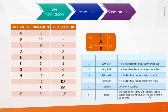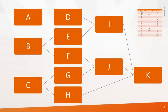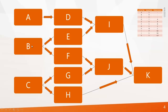Now let's see the example for better understanding. I have arranged all the activities based on their relationships and logic. In this exercise, the first three activities have no predecessors, meaning three activities start simultaneously. Activity D will start only after the completion of activity A, and activities E and F will start only after B. This is how the logic is given.